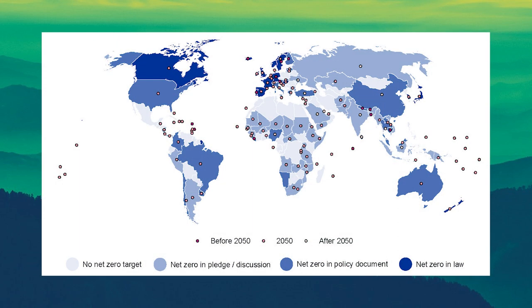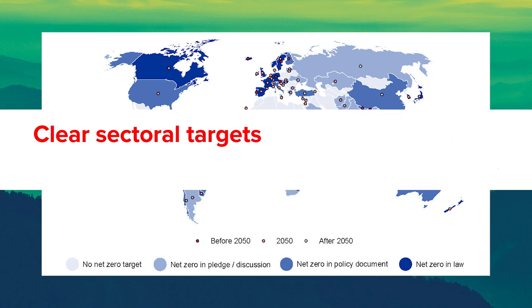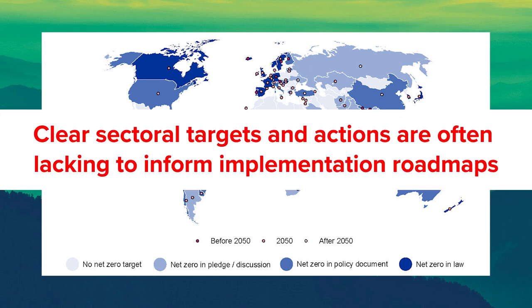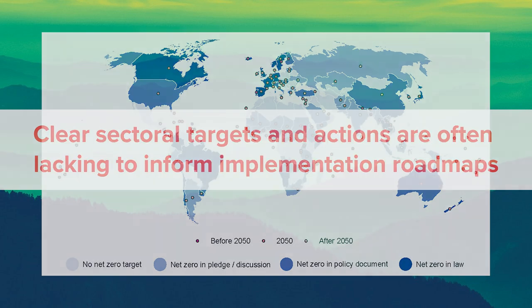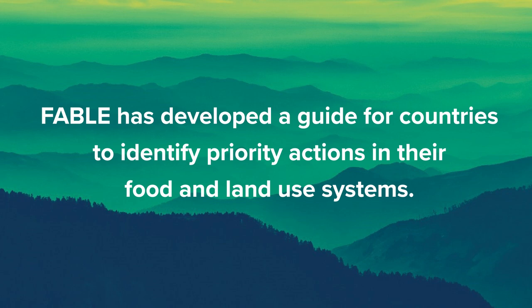129 countries have communicated net zero targets representing 88% of current total GHG emissions. However, clear sectoral targets and actions are often lacking to inform implementation roadmaps. FABLE has developed a guide for countries to identify priority actions in their food and land use systems. We will need to follow a few questions to determine a country's profile.